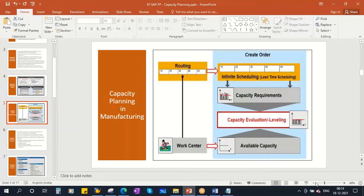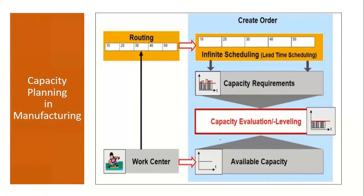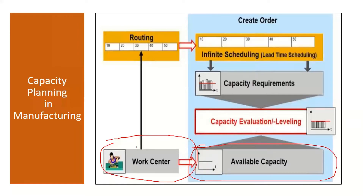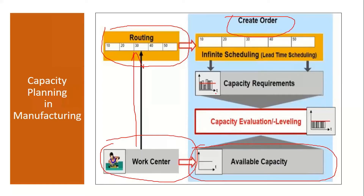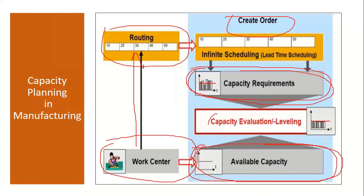First we create a work center. After creating the work center, we maintain the available capacity in it, and this work center is assigned to the routing. Then we create production orders or planned orders, which causes capacity requirements to be generated. You then have available capacity and capacity requirements, and you do the evaluation. Wherever there is overload or underload, you make them uniform using leveling.